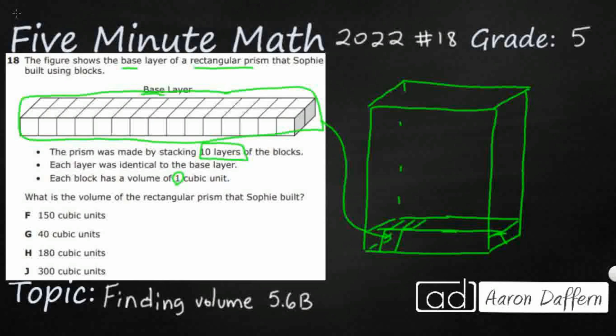I'm not going to necessarily count it out, but this is kind of what it looks like, right? We've got this front layer right here, and there's actually two rows. I'm going to draw a second row back there. There we go.